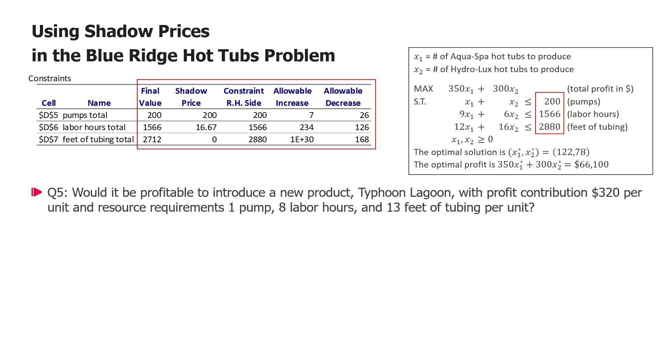So first of all consider this is like another product for this product mix so we could actually define a third decision variable some x3 and we could add it here right like a third column in this model. We could say there will be plus 320 x3, there will be plus x3 here in the pumps because every Typhoon Lagoon consumes one pump, there will be eight times x3 in the labor hour constraint and 13 times x3 in the third constraint feet of tubing. So we could actually create a modified model and solve it and see if this Typhoon Lagoon would be produced or not and how many units of it would be produced.